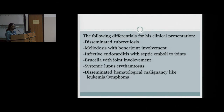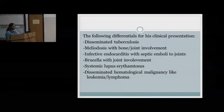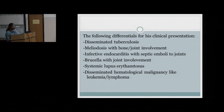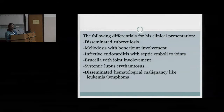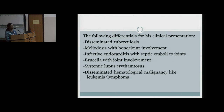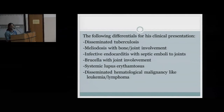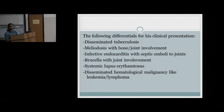Another differential was infective endocarditis with septic emboli to the joints, or brucellosis. At this point, the presenter was interrupted to ask about cardiovascular findings and murmurs. There were no murmurs and no peripheral signs of infective endocarditis, such as splinter hemorrhages.